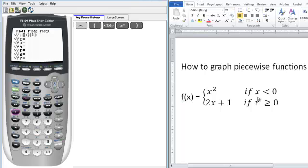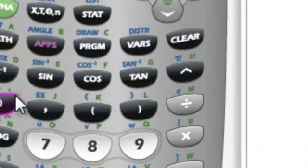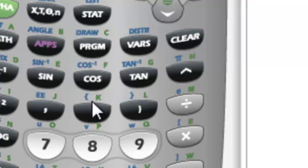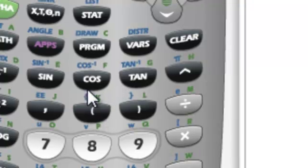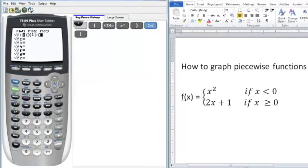Enter in the domain x < 0. We're actually going to use brackets for that part, and with the brackets, it's right above the parentheses. Since it's in blue, we have to press 2nd first to obtain the bracket, and we want x < 0.